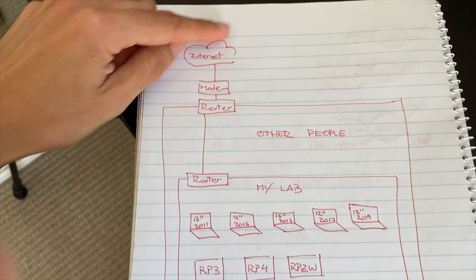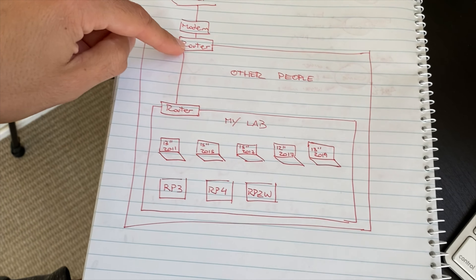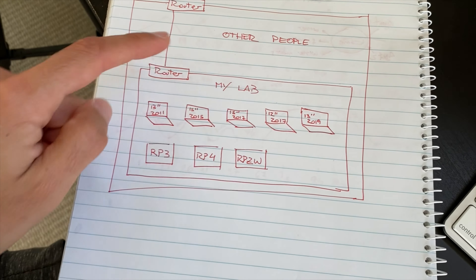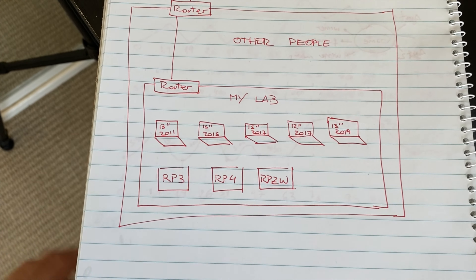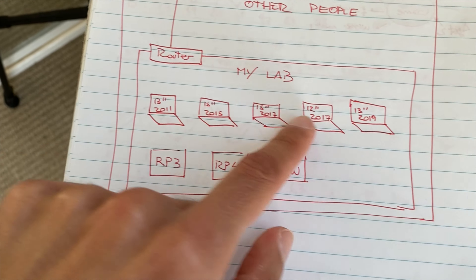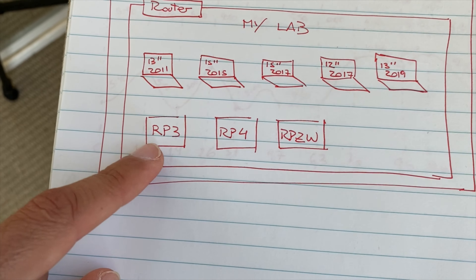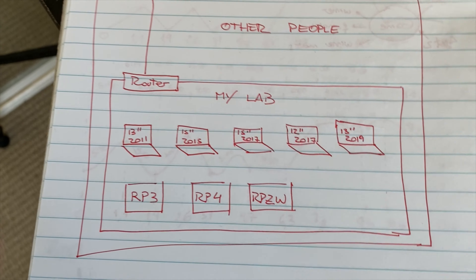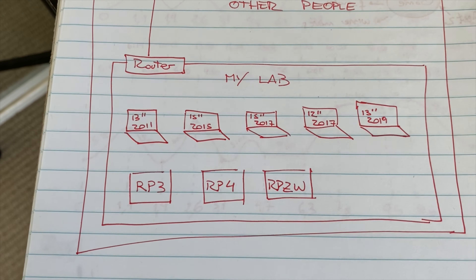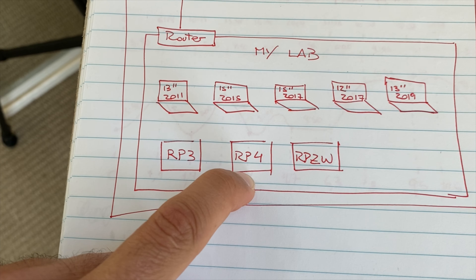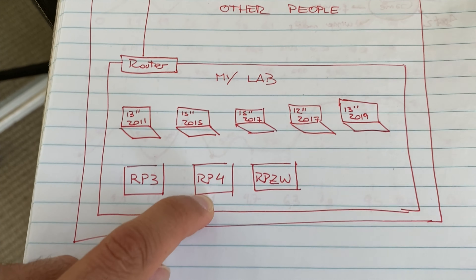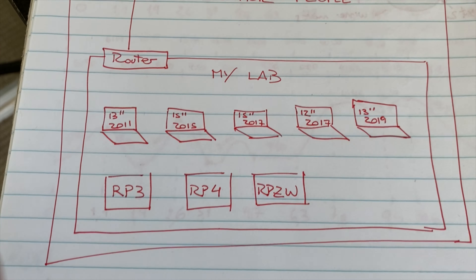First I want to show you an overview of my network because that's important in order to understand the system. This is the network of my apartment — we have the internet, then the ISP's router and the home network, but then I have my own lab with my own router and my own devices, isolated from everything else. I have a bunch of laptops, some connected via Wi-Fi, some via Ethernet, and Raspberry Pi 3, 4, and 0 connected via Wi-Fi. I'm going to use the Raspberry Pi 4 as the server.